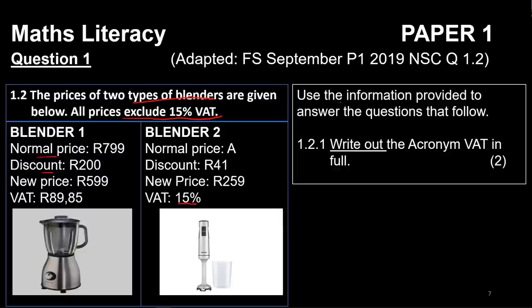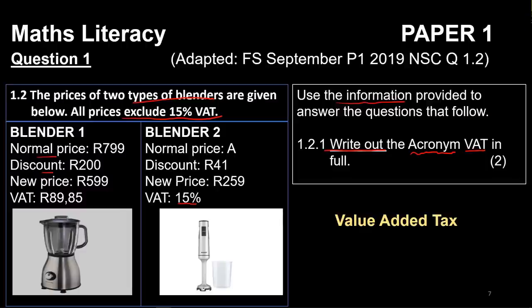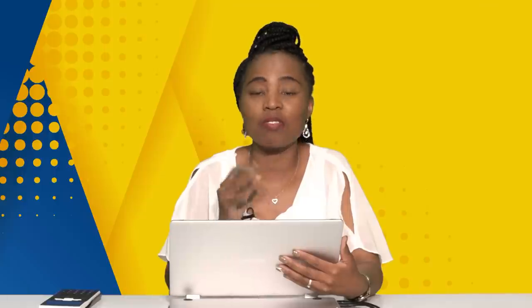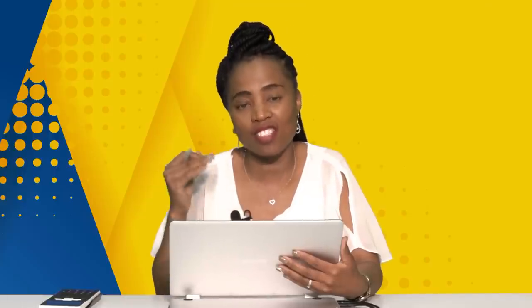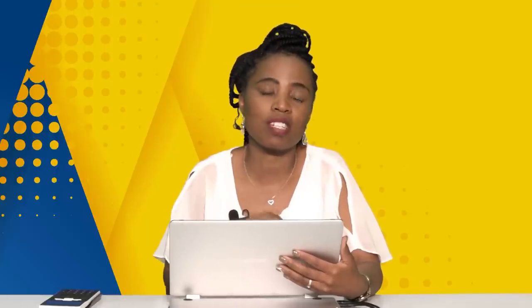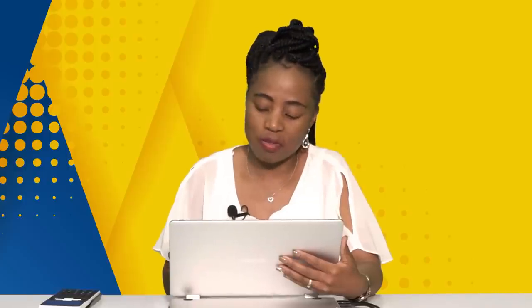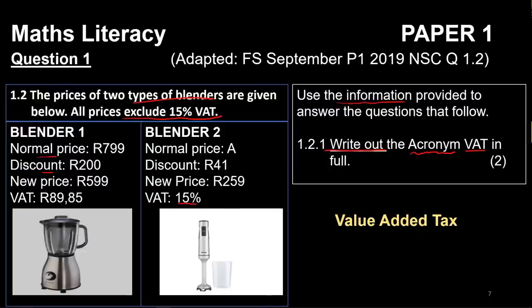One question says: write out the acronym VAT in full. Acronym means the abbreviation, so we need to tell them what VAT stands for. Yes — it's Value Added Tax. Remember, if they ask you to define it, then you need to go into detail to explain that it is the tax that is charged. But here we just want to spell out that acronym.